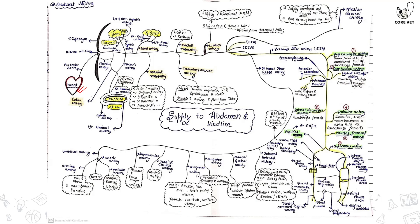Next are the right and left rumenal arteries. The right rumenal artery runs in the right longitudinal groove and crosses the caudal transverse groove, then runs in the left longitudinal groove and runs caudally to anastomose with the right rumenal artery.